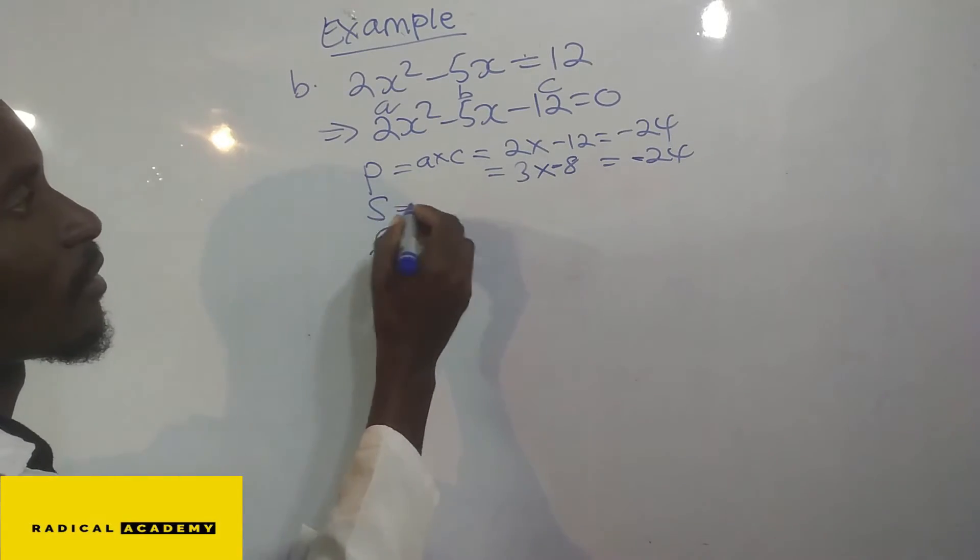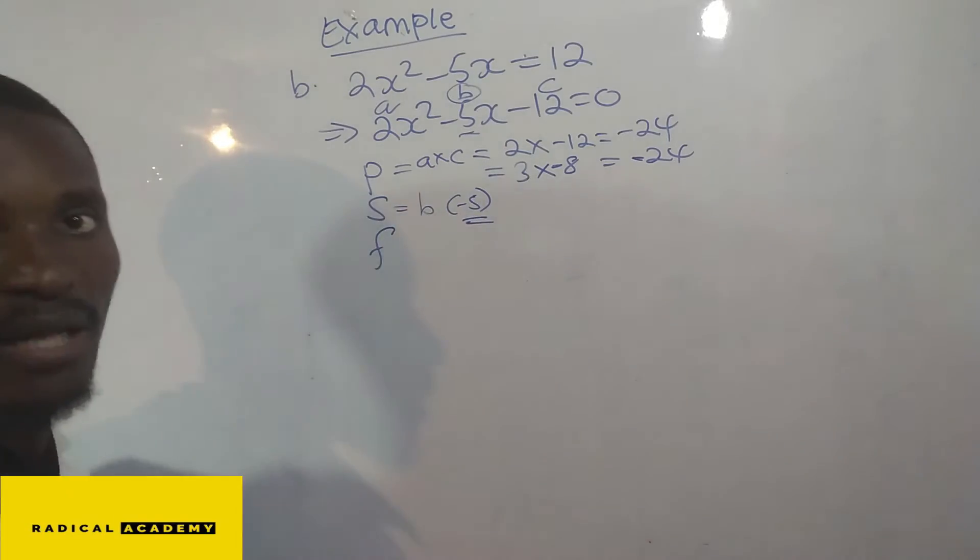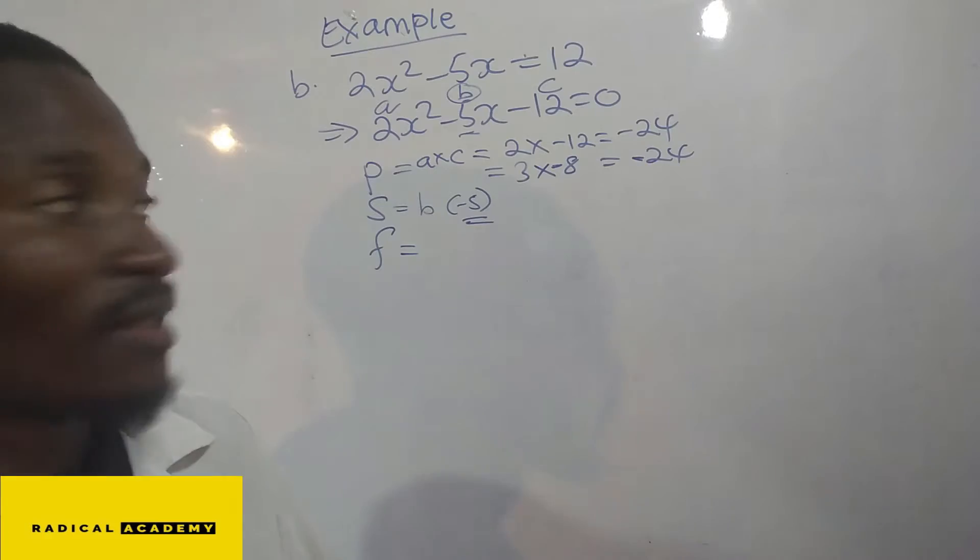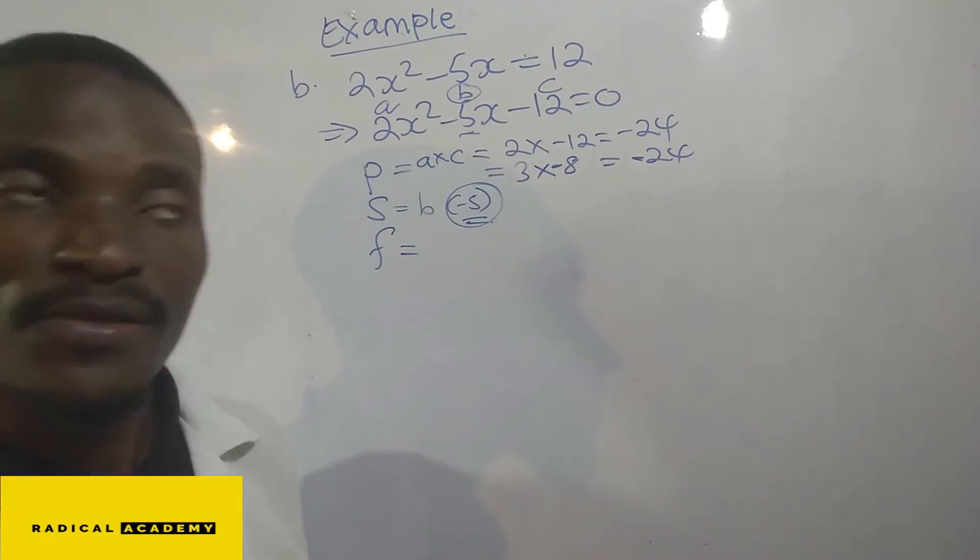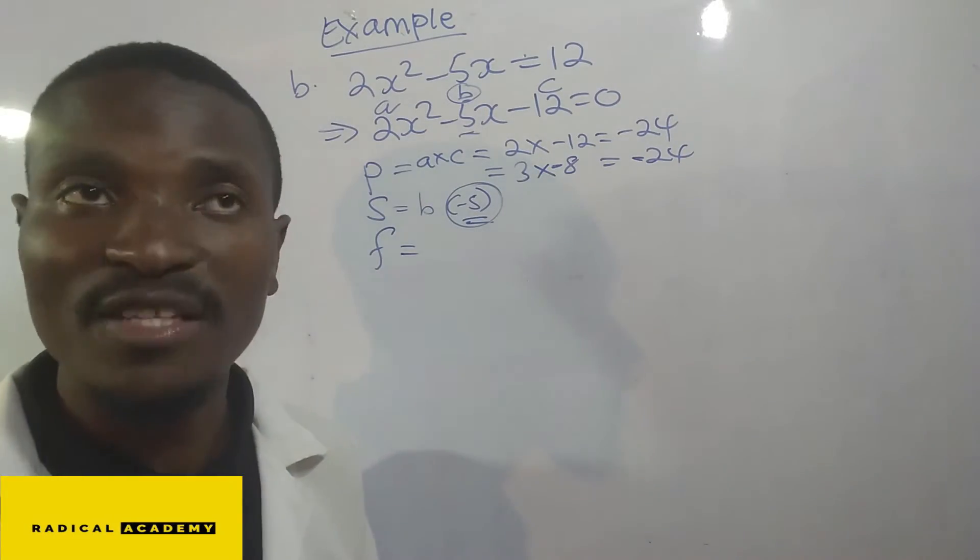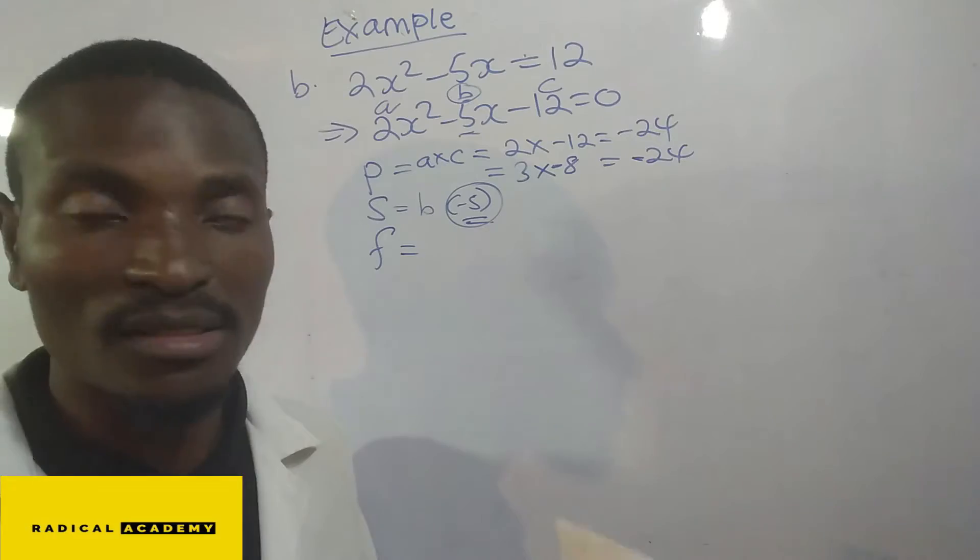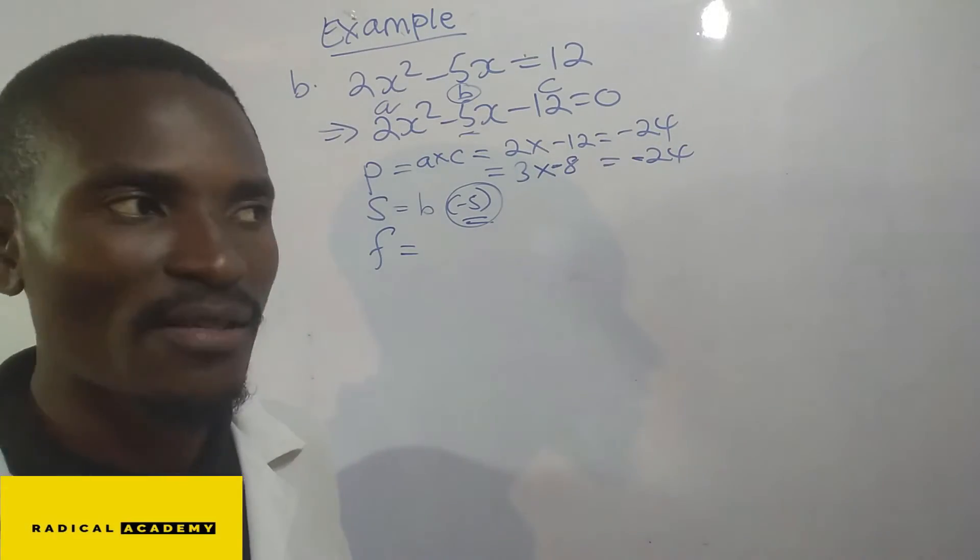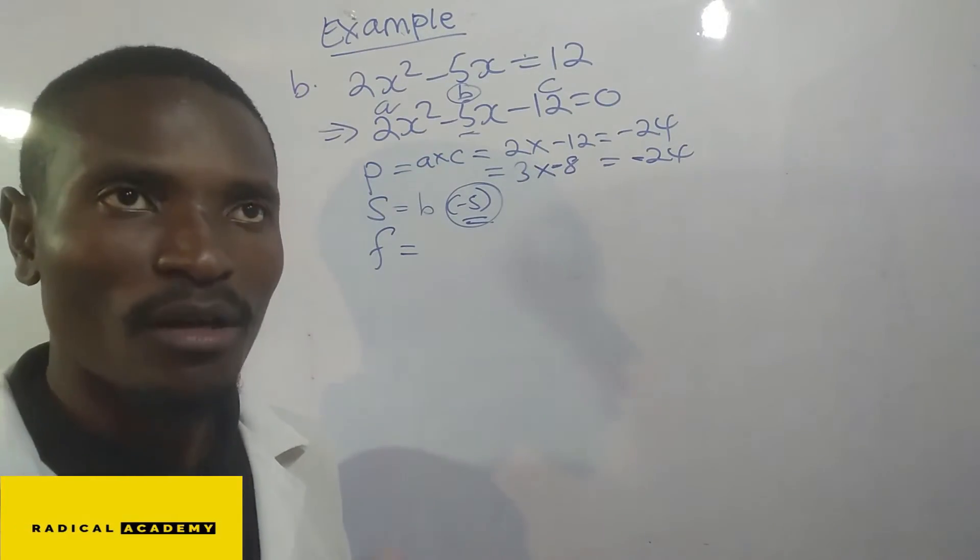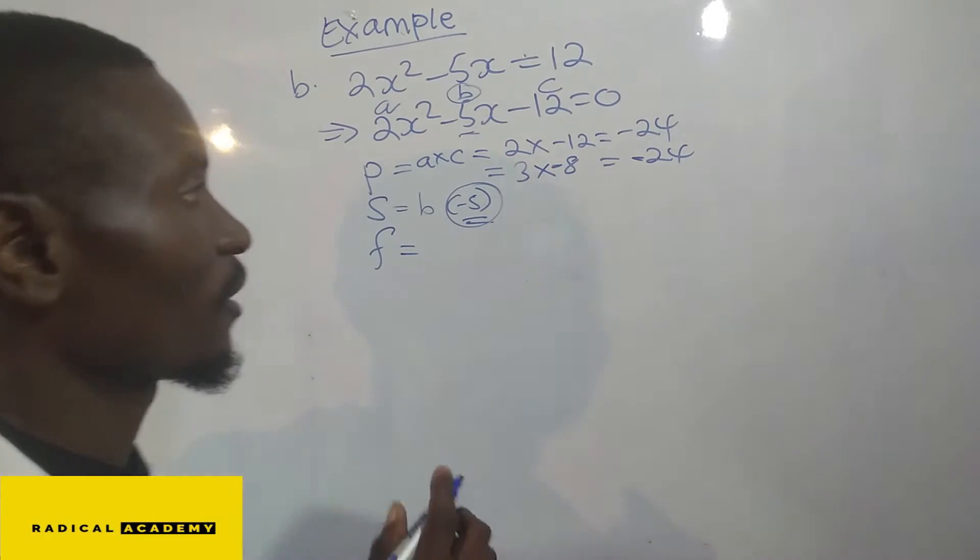Now the sum is this one, B, which is negative 5. So this is our sum. Now the factors are the numbers that we can add in order to get the sum. The factors are the numbers, two numbers from the product list. Don't go and collect these numbers from anywhere else. You always need to collect them from the product list because we have so many numbers that can give us negative 24. But on the list of those numbers, you have to ensure that you get those two numbers that when you add them, they are going to give you negative 5.